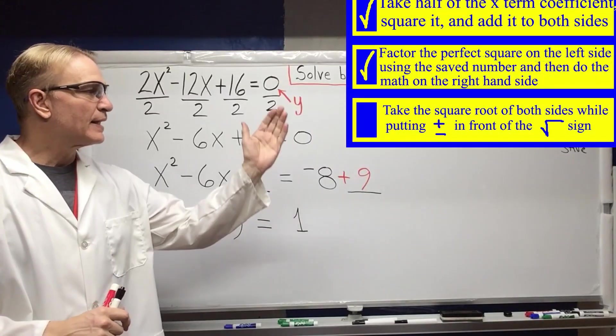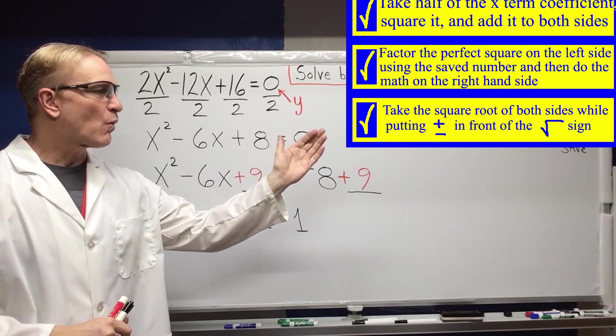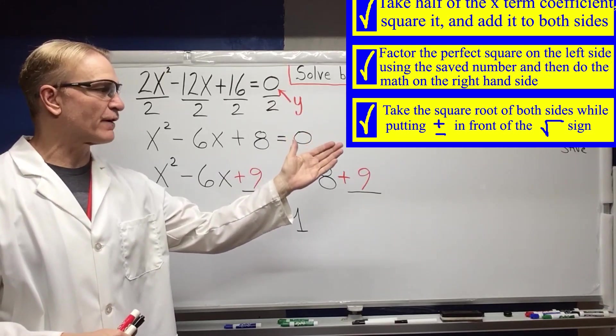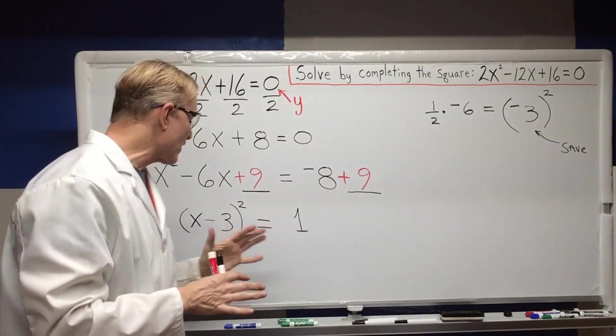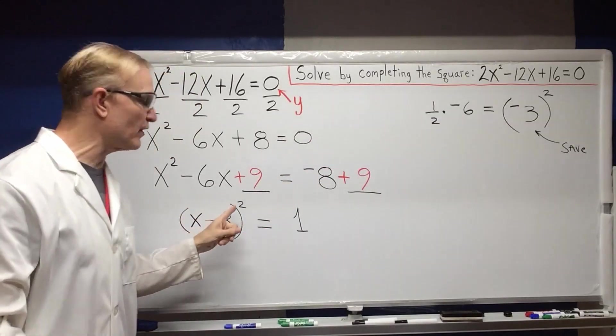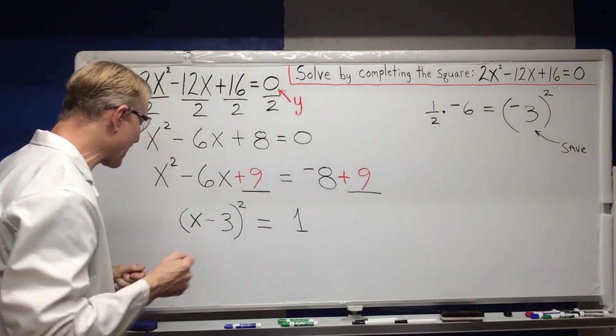Take the square root of both sides while putting a plus or minus in front of the square root sign on the right. The reason that we're taking the square root is to undo the square. So if I take the square root of both sides,